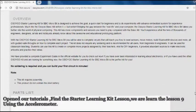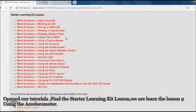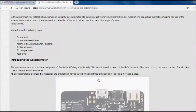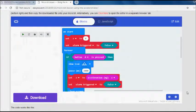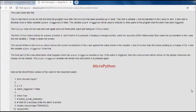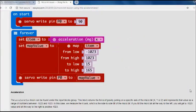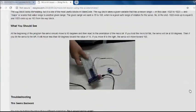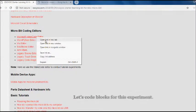Open our tutorials, find the starter learning kit lesson. We are learning lesson 9: Using the Accelerometer. Let's code blocks for this experiment.